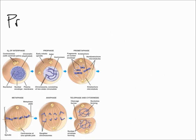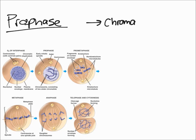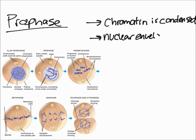Prophase - let's remember some important facts. One, chromatin is condensed. The nuclear envelope disintegrates,